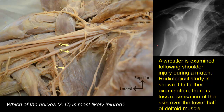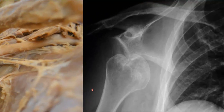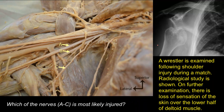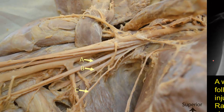A wrestler is examined following a shoulder injury during a match. Radiological study is shown. On further examination, there is loss of sensation of the skin over the lower half of the deltoid muscle. Which of the nerves A to C is most likely injured? It is clear from the radiograph that there is a dislocation of the shoulder joint that might stretch and injure the axillary nerve lying just beneath the joint. Let's look at the dissection and find the axillary nerve among the branches of the posterior cord of the brachial plexus.